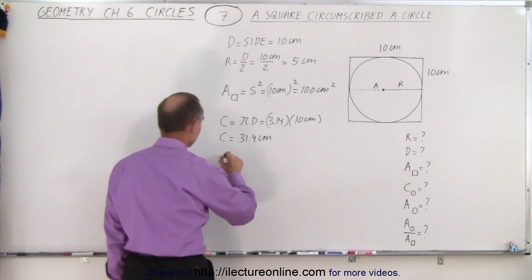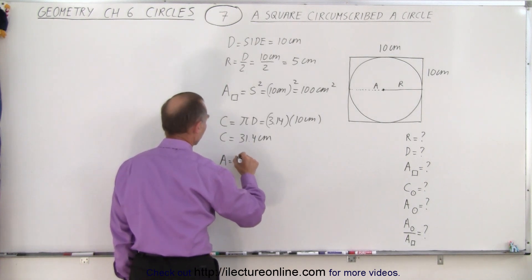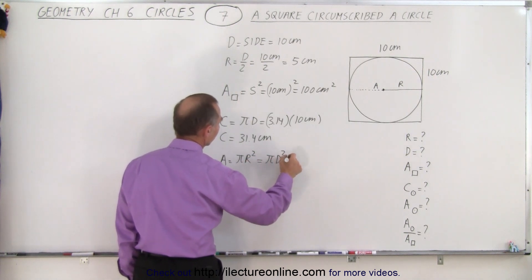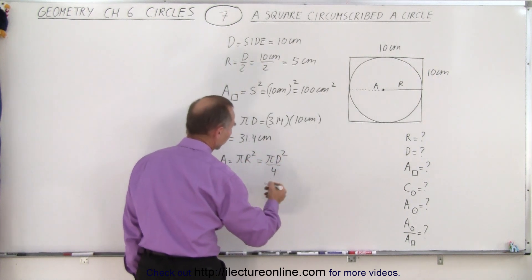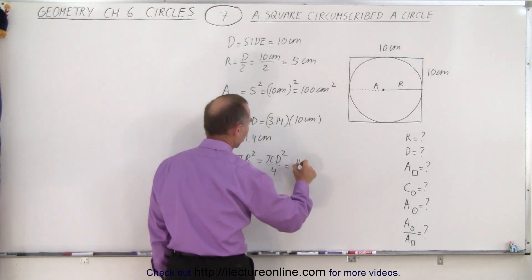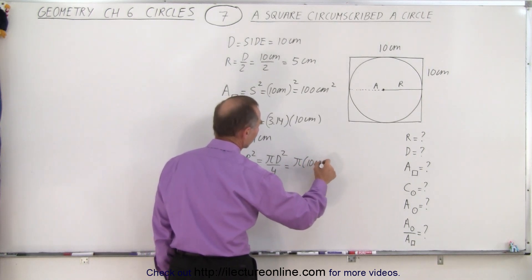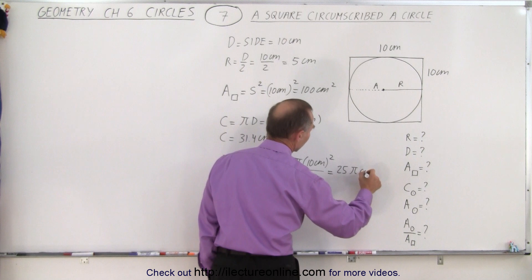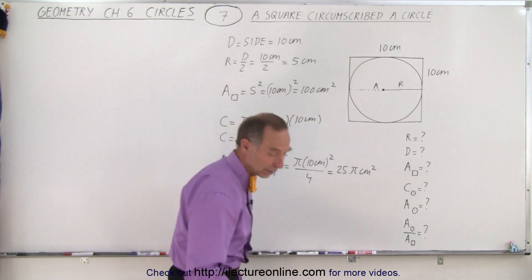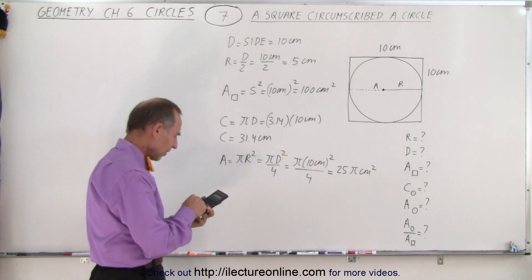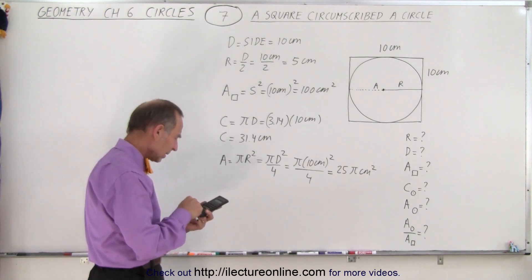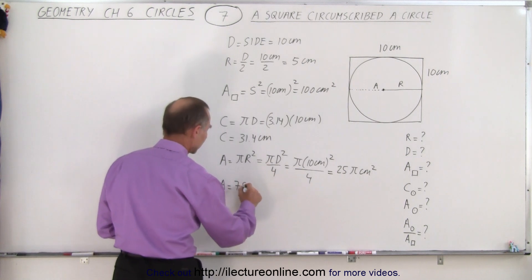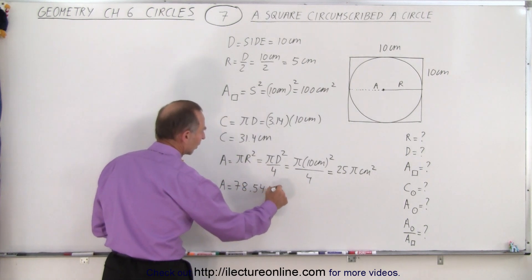The area of the circle is equal to pi r squared, or pi d squared divided by 4, whichever way you want to write it. So in this case it would be pi times 10 centimeters squared divided by 4, which is equal to 25 pi centimeters squared. Of course if you want an exact number, you take 25 multiplied by pi and you get 78.54. So the area equals 78.54 centimeters squared.